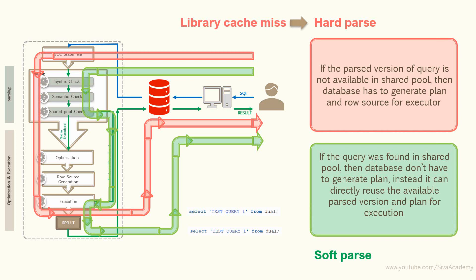So we can see two different paths. When Oracle cannot find the relevant information in the shared pool — or when a query runs for the very first time — it goes through all six steps: syntax check, semantic check, shared pool check, optimization, row source generation, and execution. This is called a hard parse. Whenever a hard parse happens, it is called a library cache miss. Whenever a soft parse happens, it is called a library cache hit. A higher percentage of library cache hits means better performance; a higher percentage of library cache misses means lower performance. For optimal performance, the hit ratio should be higher than the miss ratio.